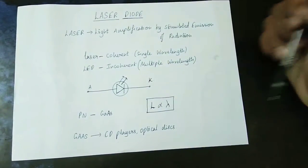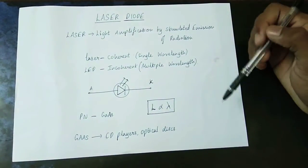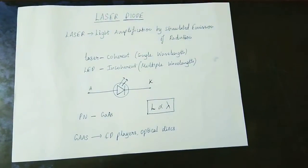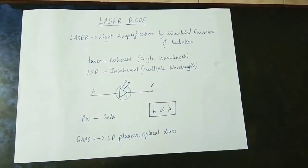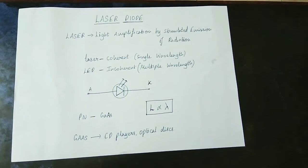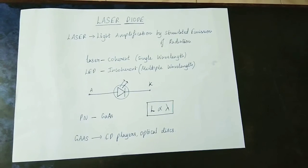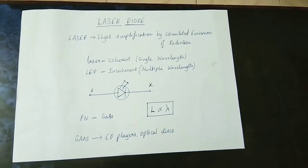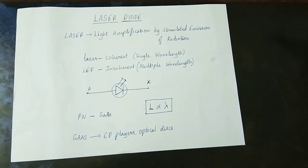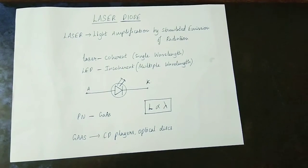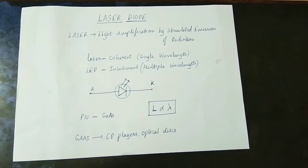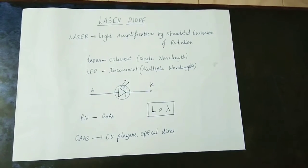The output wavelength L is directly proportional to lambda, the wavelength of light. The wavelength depends on the photons in the light, and it depends on the PN junction diode. If you change the length of the diode, it changes the wavelength of the output.